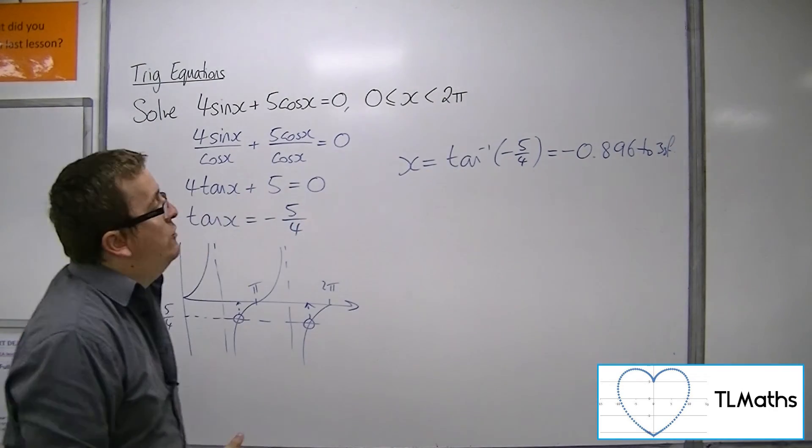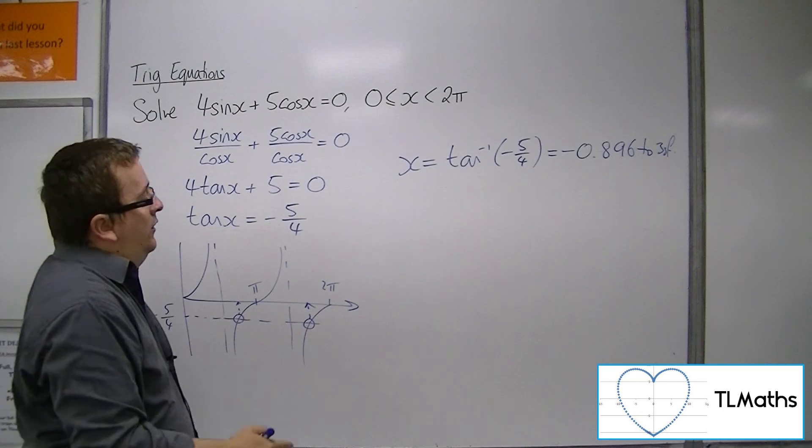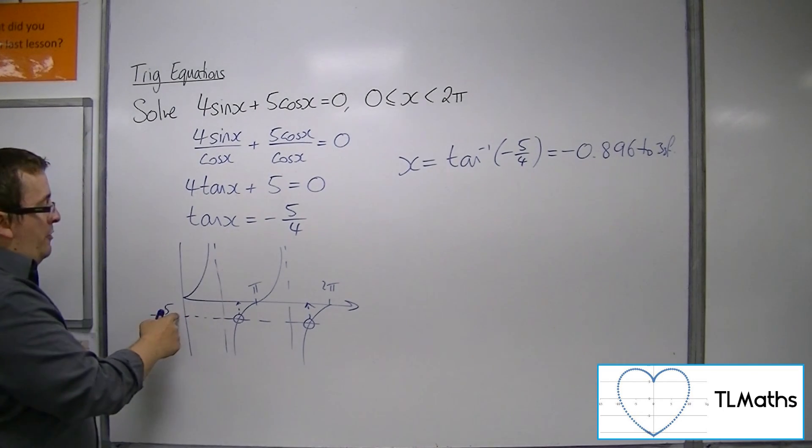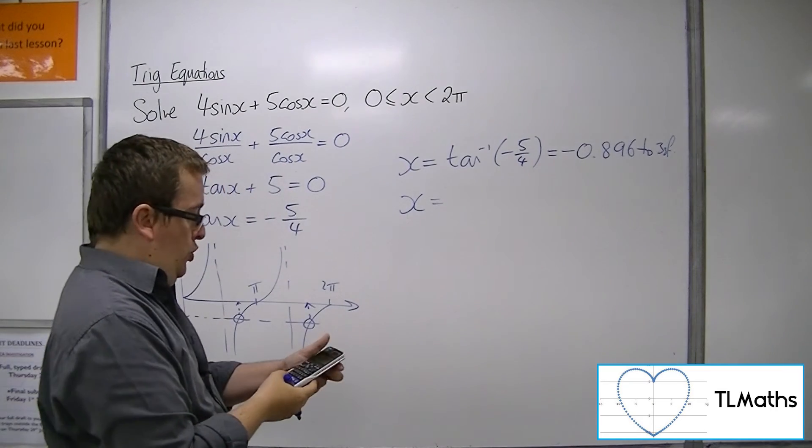So that's not between 0 and 2π, that's a solution to the left of the y-axis. Because tan has a period of π, I just need to add on π to get my first solution.